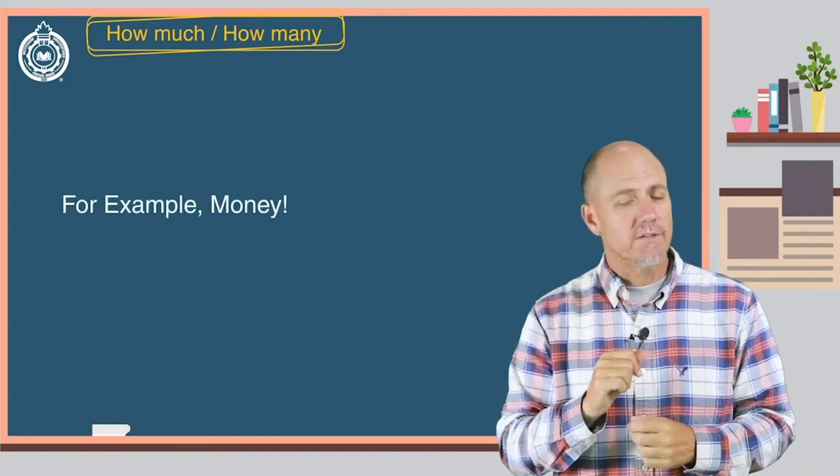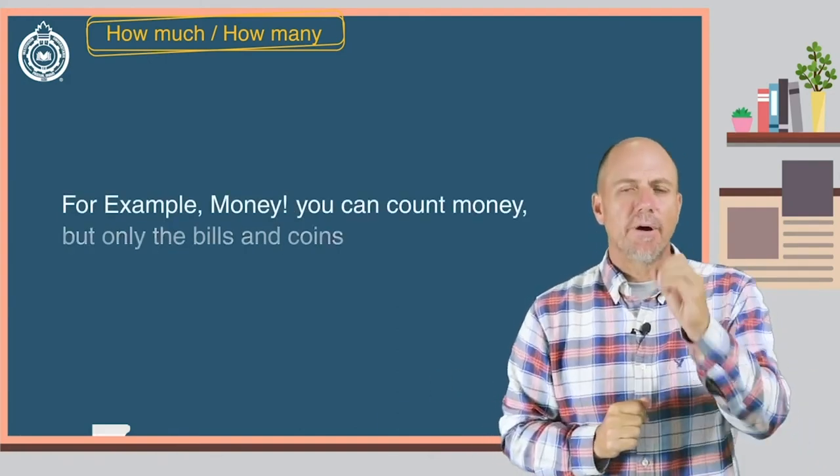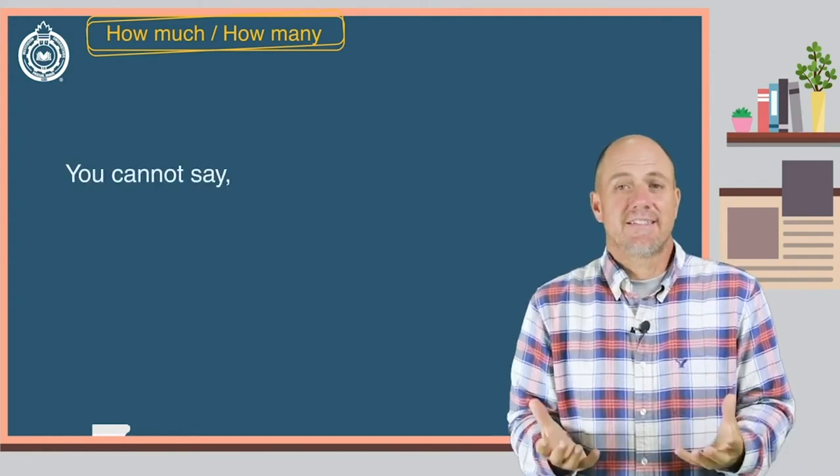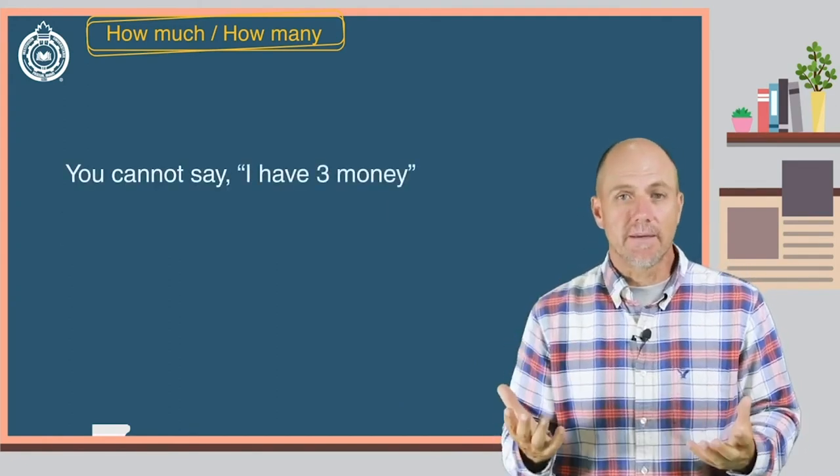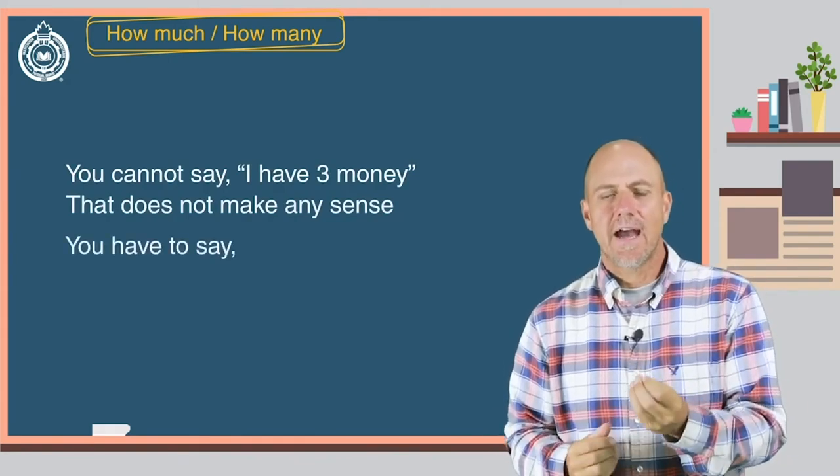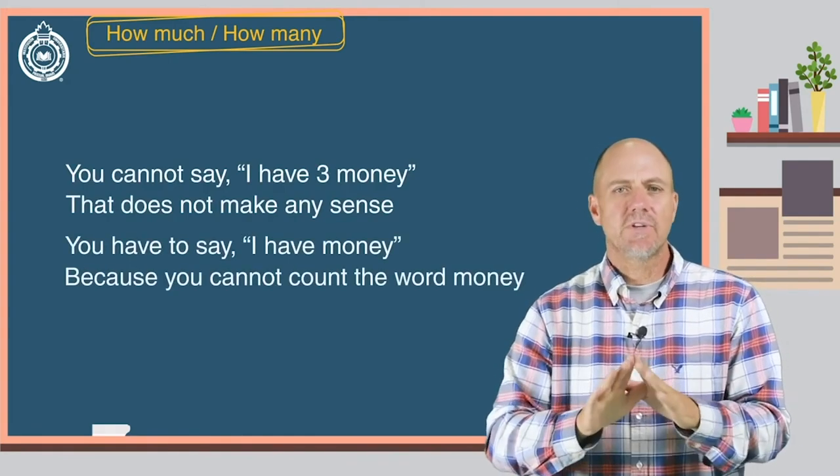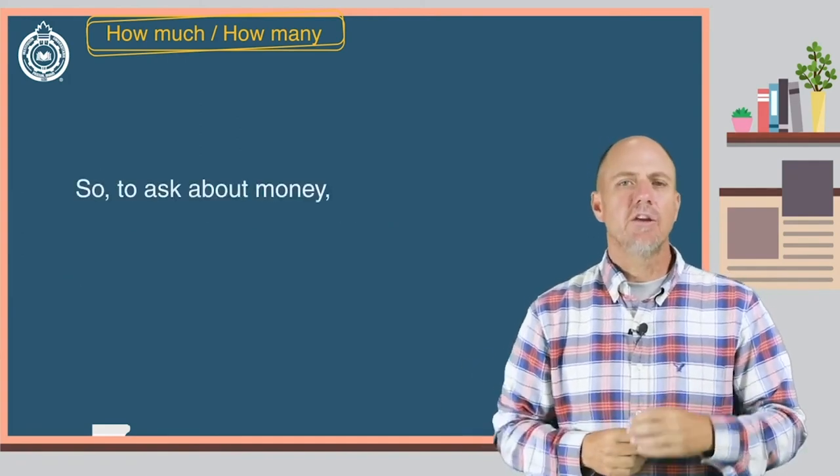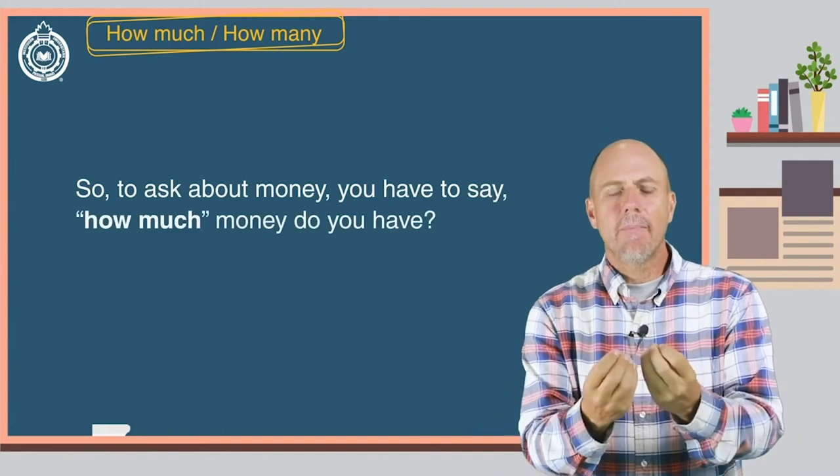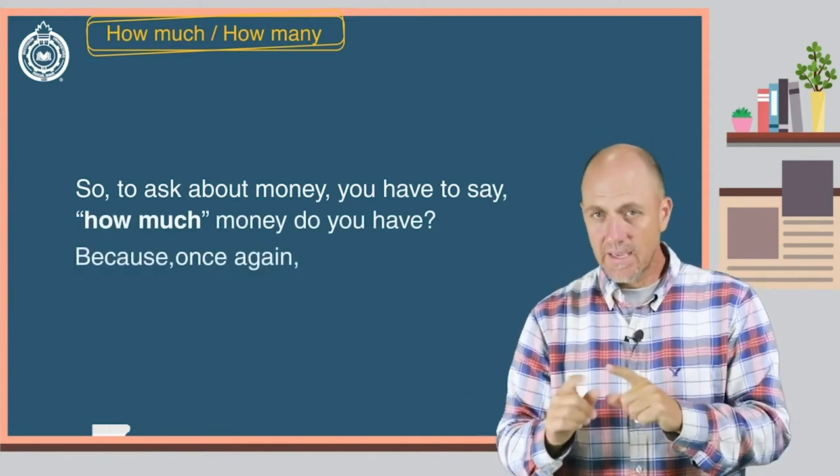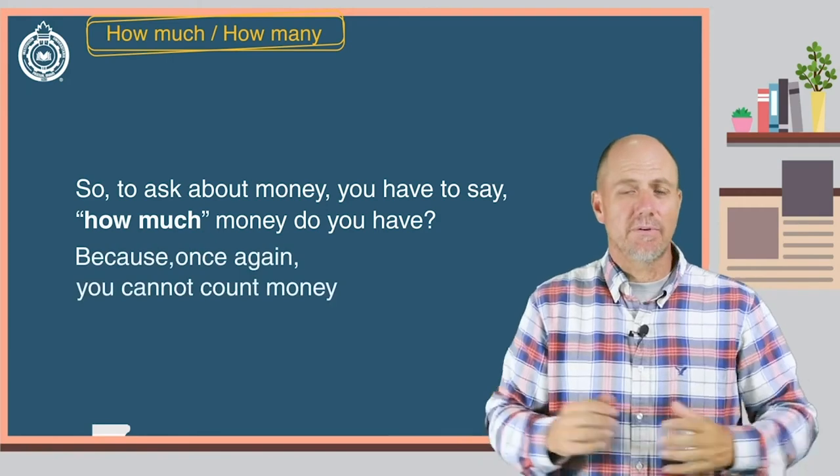For example, money. Yes, you can count money, but only the bills and coins. You cannot say, I have three money. That does not make any sense. You have to say, I have money, because you cannot count the word money. So, to ask about money, you have to say, how much money do you have? Because, once again, you cannot count money.